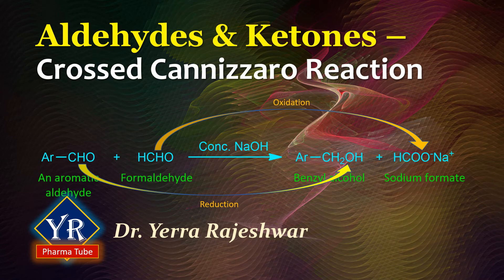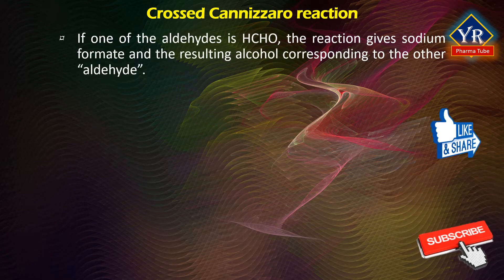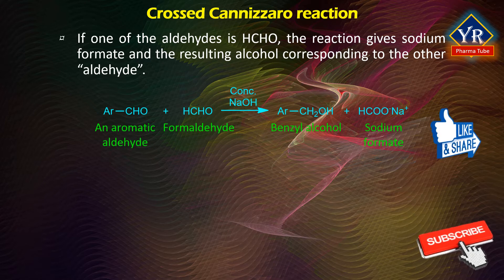In this lesson, we shall try to understand the crossed Cannizzaro reaction. In general, an admixture of two aldehydes undergoes a Cannizzaro reaction to produce an array of all possible products. Now, if one of the aldehydes is formaldehyde, the reaction gives almost exclusively sodium formate and the resulting alcohol corresponding to the other aldehyde. In other words, when an aldehyde is treated with aqueous base and formaldehyde, it is the formaldehyde rather than the other aldehyde that is oxidized. Such a reaction is invariably termed as the crossed Cannizzaro reaction.